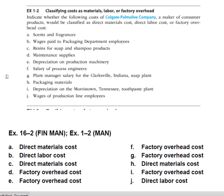Here's a question that a student is asked about — we're going to be classifying costs. It says: indicate whether the following costs of Colgate-Palmolive Company, a maker of consumer products, would be classified as direct materials, direct labor costs, or factory overhead. Knowing that Colgate-Palmolive makes soaps and toothpaste and those kinds of things, that's what we're going to be considering.